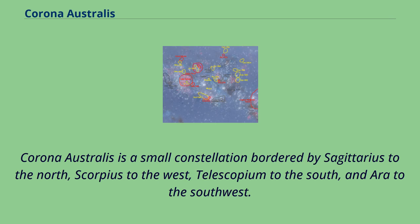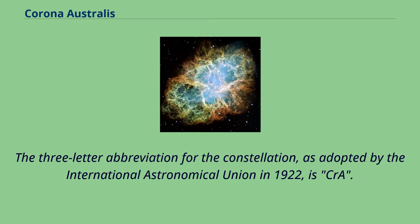Corona Australis is a small constellation bordered by Sagittarius to the north, Scorpius to the west, Telescopium to the south, and Ara to the southwest. The three-letter abbreviation for the constellation, as adopted by the International Astronomical Union in 1922, is CRA.